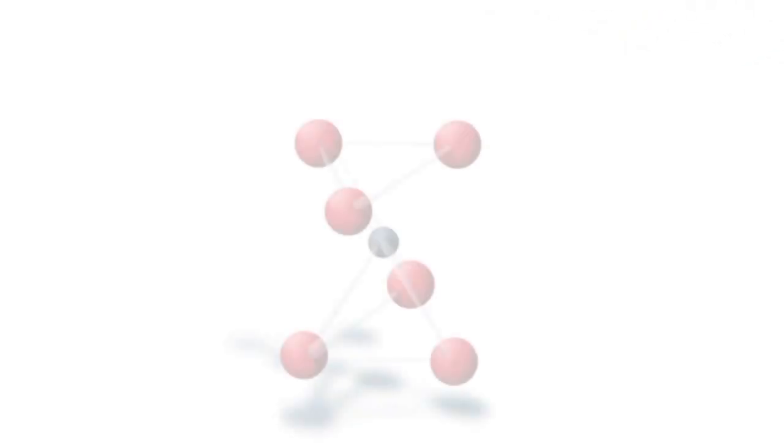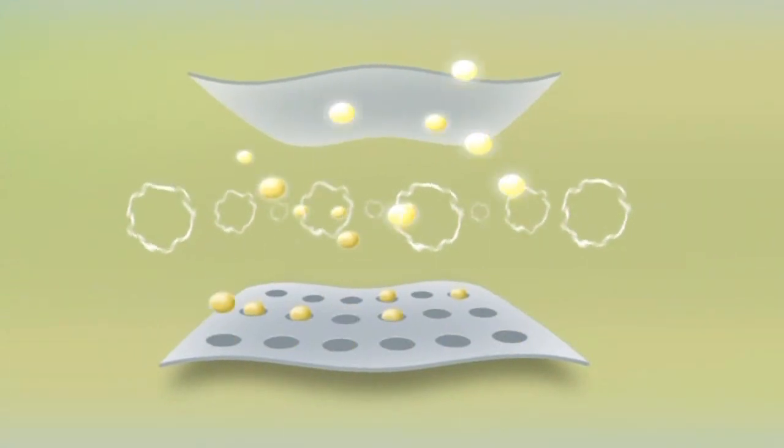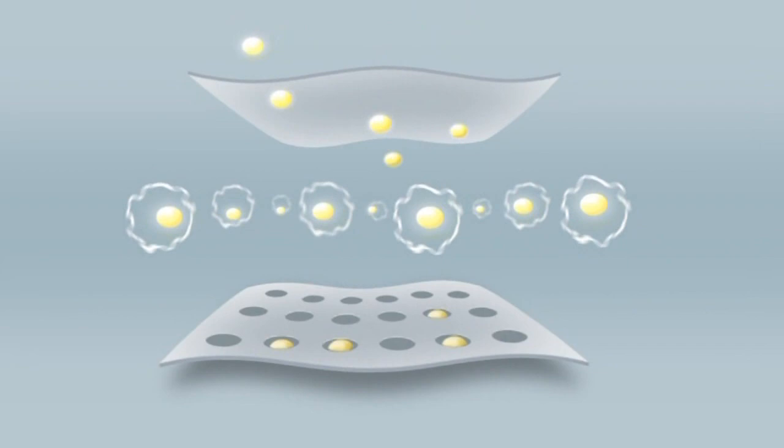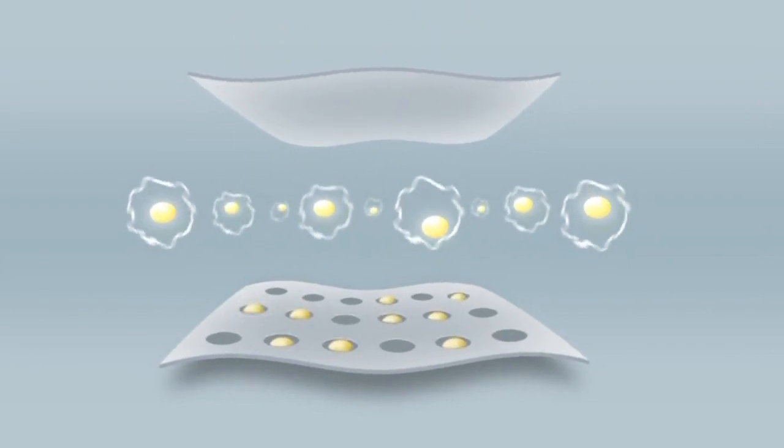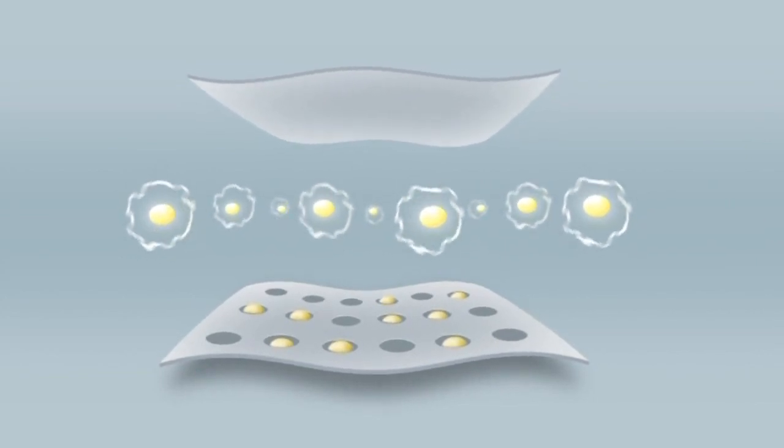OSL dosimetry utilizes aluminum oxide crystals manufactured by Landauer to include a latticework of dosimetric traps. When exposed to radiation, electrons in the crystal are stimulated to jump out of the valence energy band up into the conduction band before falling back through the band gap where some become caught in the dosimetric traps.